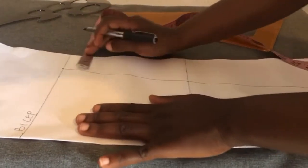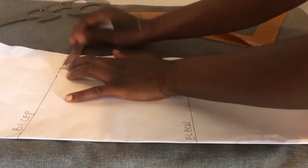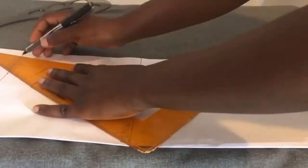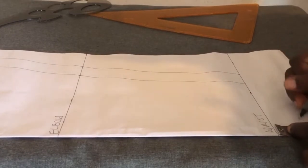I'll be adding allowance, so I'll be adding 1 inch allowance all through. I'll be adding my seam allowance to the wrist line, so I'll be adding 1 inch.